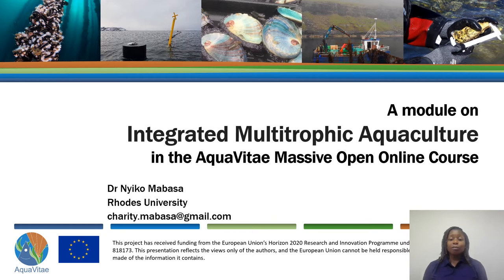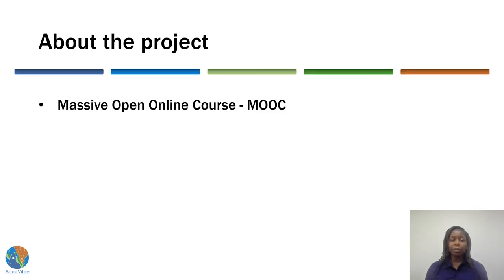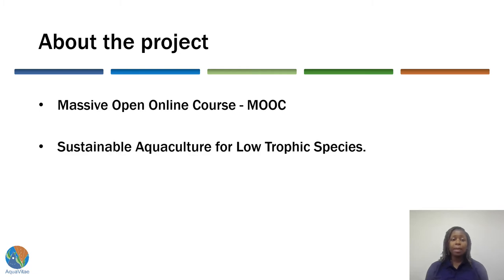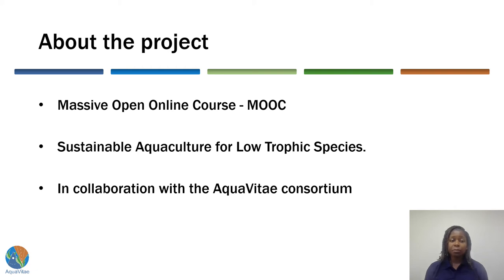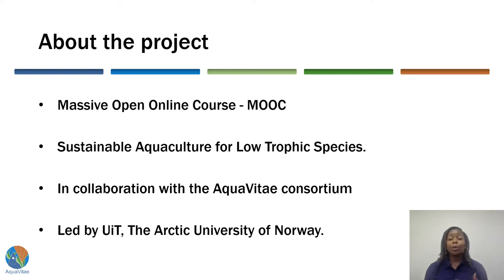The title of my talk is called 'A Module on Integrated Multitrophic Aquaculture in the AquaVitae Massive Open Online Course.' This project is on the development of a massive open online course, abbreviated MOOC, on sustainable aquaculture for low-trophic species. This project is done in collaboration with the AquaVitae Consortium, and it is led by UIT, the Arctic University of Norway.